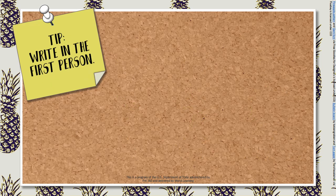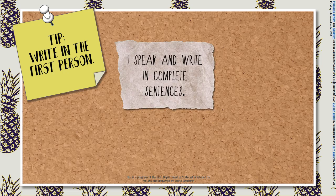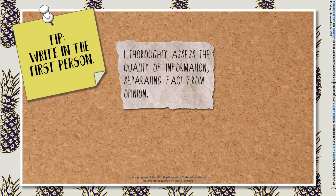Writing quality definitions in the first person can often make them easier to read. This is especially true for younger learners. Two examples of this are: I speak and write in complete sentences. Or, I thoroughly assess the quality of information separating fact from opinion.